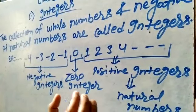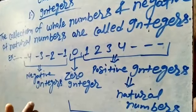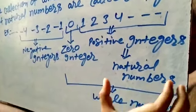Zero is called zero integer. And negative of natural numbers are called negative integers.